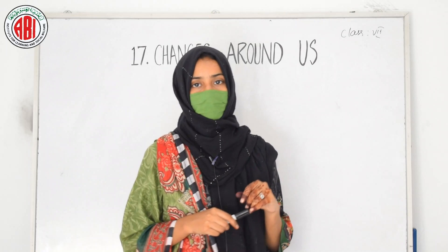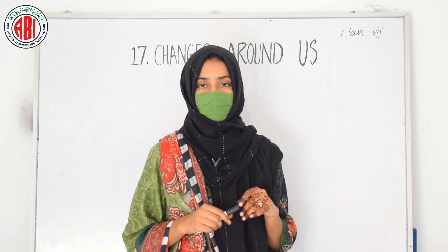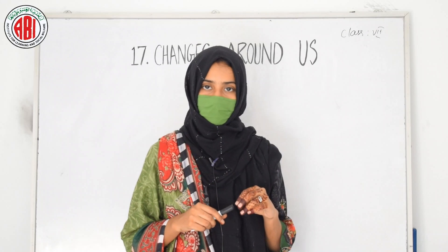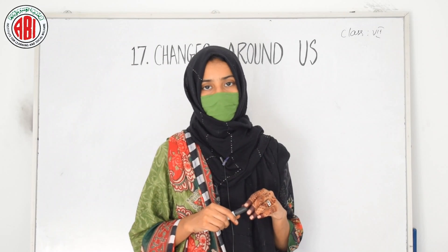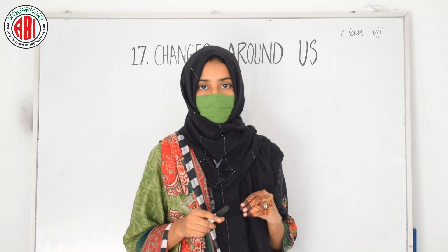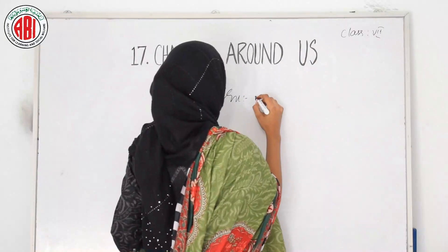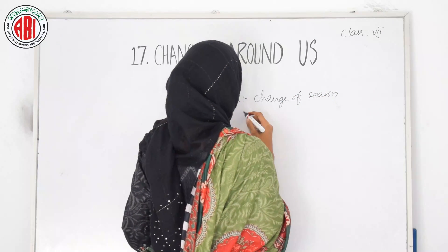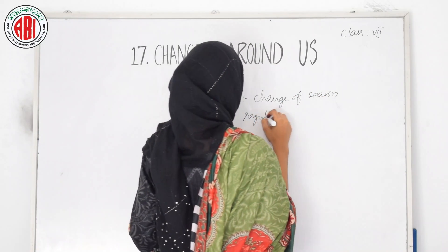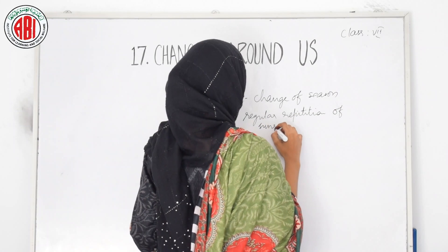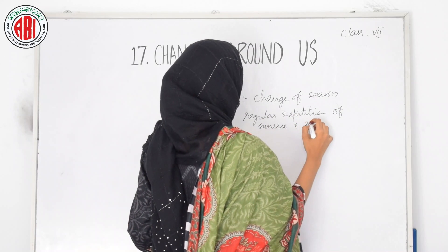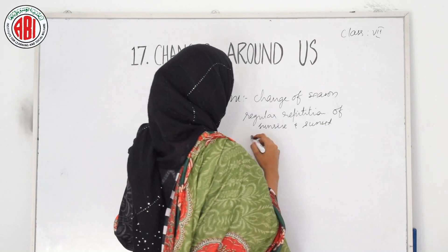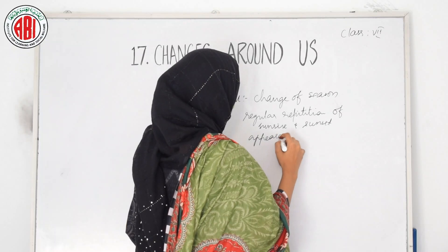In this lesson we are going to discuss the different kinds of changes that can be observed in our surroundings. Usually some of the changes are permanent and some are temporary. There are so many changes that take place naturally, for example change of seasons, regular repetition of sunrise and sunset, and even the appearance of a full moon.